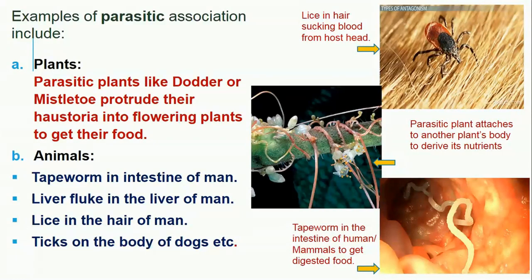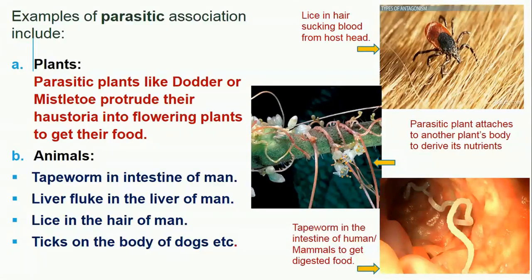Examples of parasitic association in animals include: tapeworm in the intestine of man — the tapeworm feeds on the digested food of man, which is harmful to the man; liver fluke in the liver of man — they feed on the blood of man; lice in the hair of man — they feed on the blood of man; and ticks on the body of dogs and other mammals — they feed on the blood of dogs and other mammals.